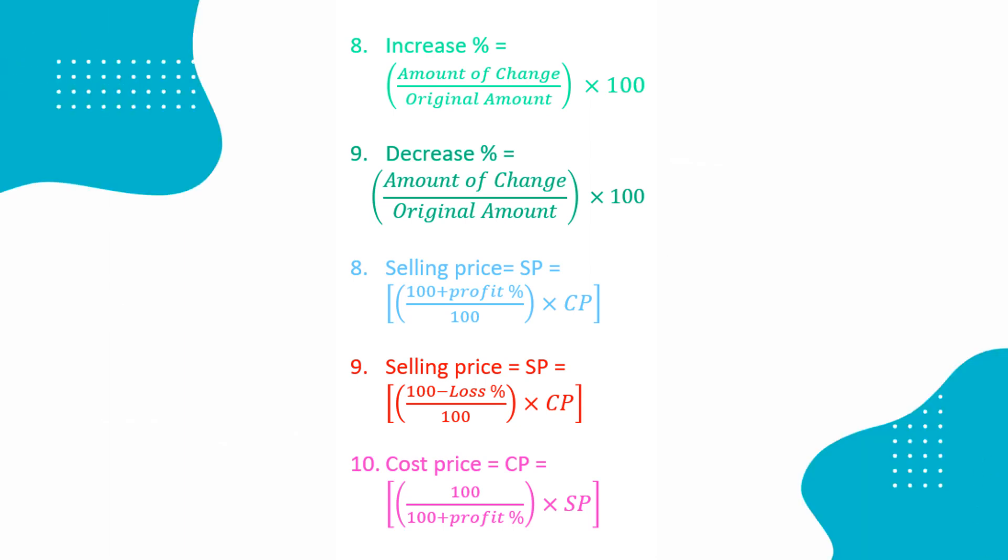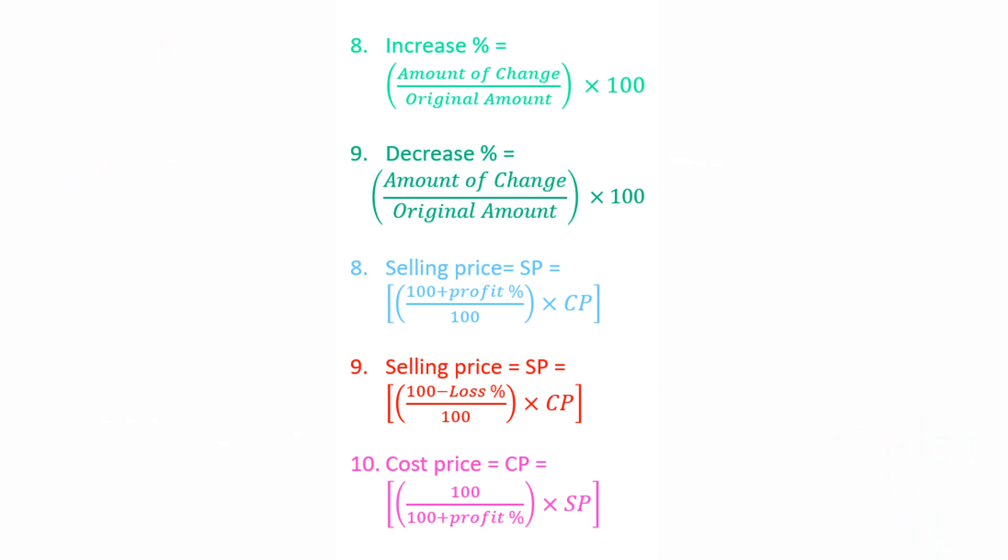SP equal to 100 plus profit percentage by 100 into CP. SP equal to 100 minus loss percentage by 100 into CP.